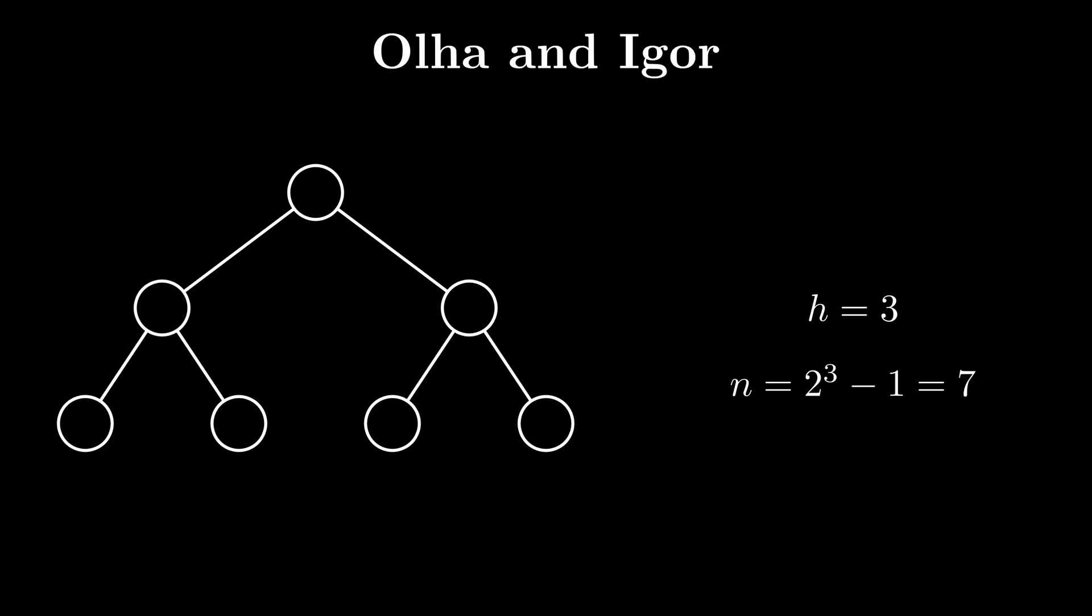The nodes have been assigned distinct labels from 1 to 2 to the power of n minus 1. We do not know which labels correspond to which nodes.